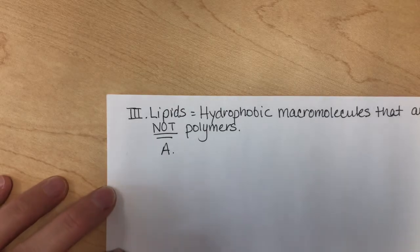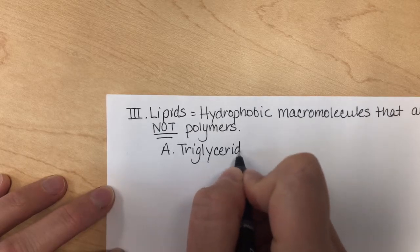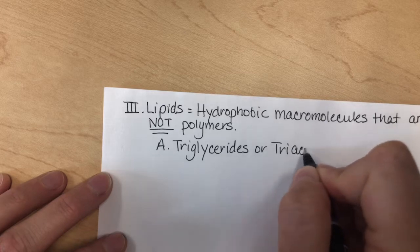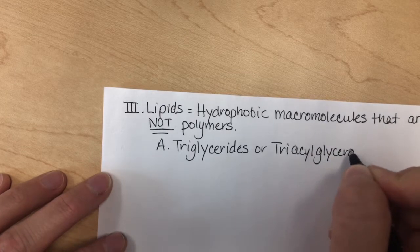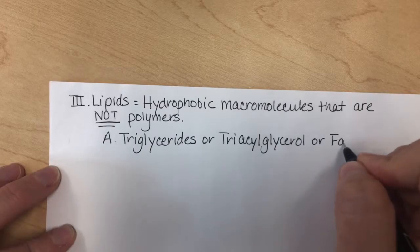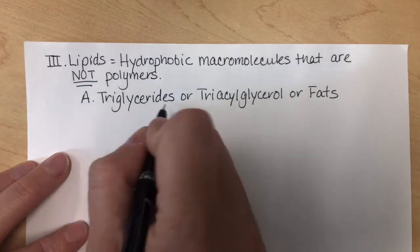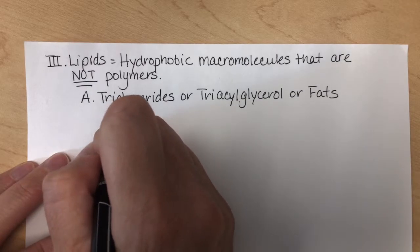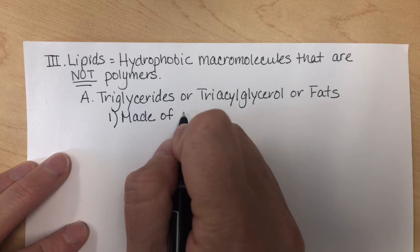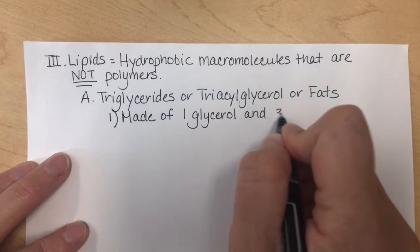There are three different kinds of lipids you need to know about. The first ones are called triglycerides, or sometimes triacylglycerol — those two terms are the same thing — or in layman's terms, fats. Why do they call it triglyceride? Tri means three. They're made of one glycerol molecule and three fatty acid molecules.